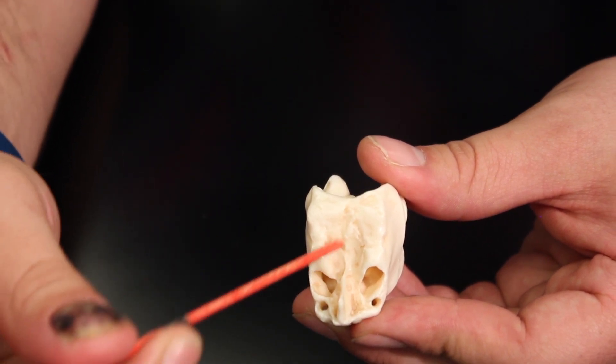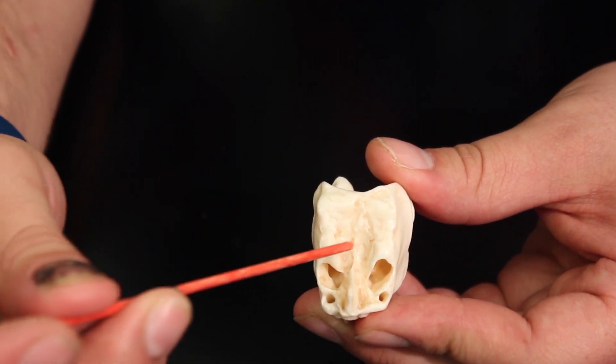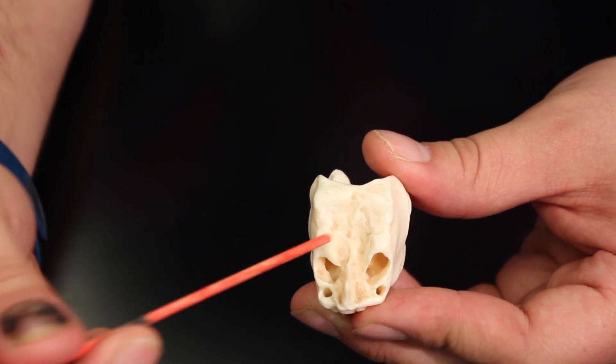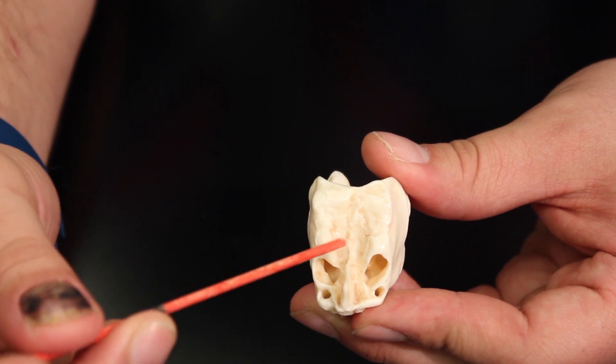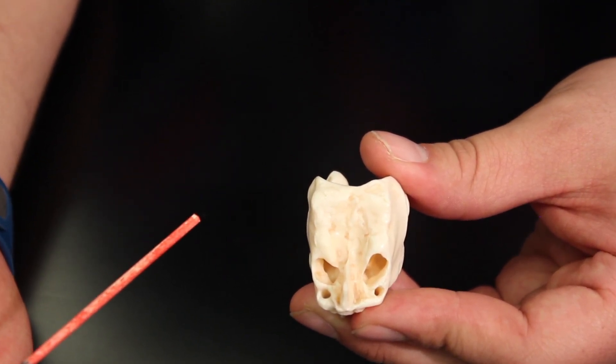Then if you remember before, I said there's like a plate here that's running right here and there's little holes in it. You might be able to notice some of the little holes. Those little holes are called the olfactory foramina. But that plate that has all those holes in it is actually going to be called the cribriform plate of the ethmoid bone.